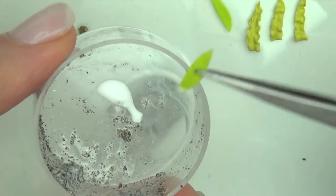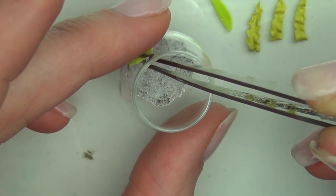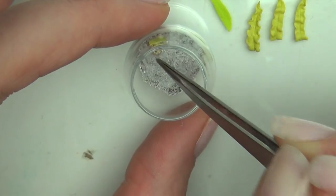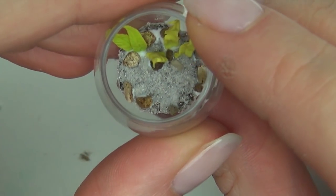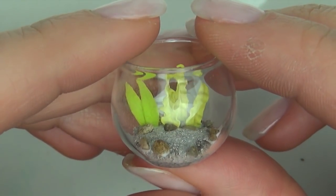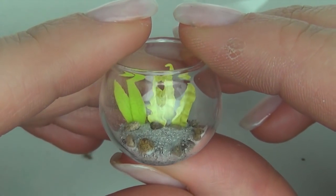Now glue your plants in place. I also added some tiny rocks. When you're happy with the placement, it's important you let everything dry completely. The glue has to be completely transparent.